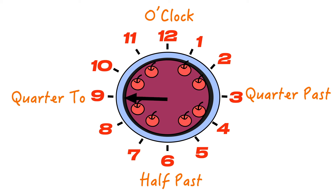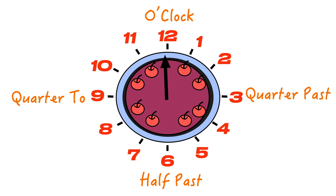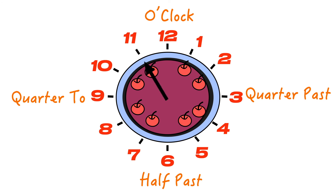Now we're focusing on the minutes-to side of our clock. You can see our minute hand pointing to the 9. We need to think about how far our minute hand has to go until it gets to the next hour. It's going to move in a clockwise direction to the 12. By dividing our clock into quarters, from the 9 to the 12 is one quarter of a movement around the clock. So when the minute hand is pointing to the 9, we call that quarter to the hour.